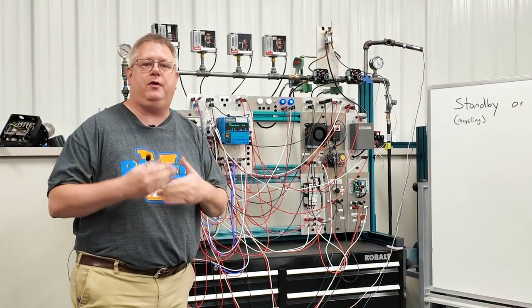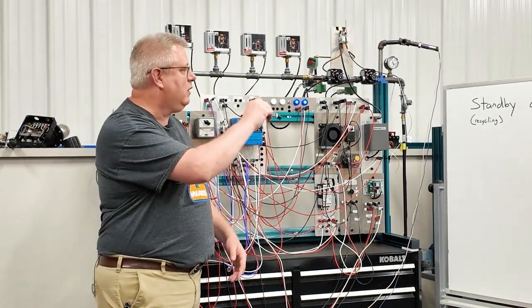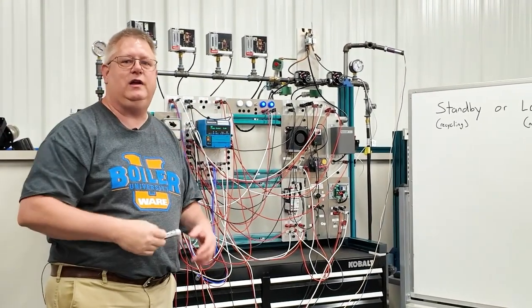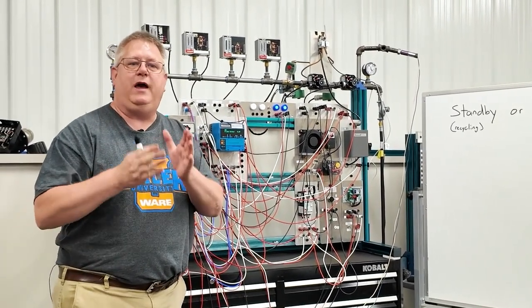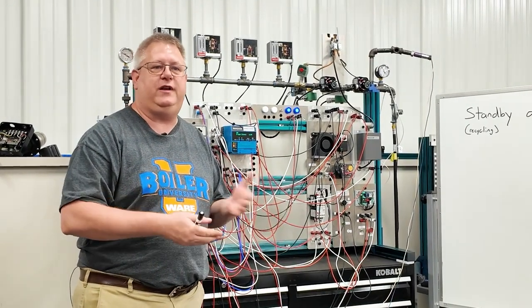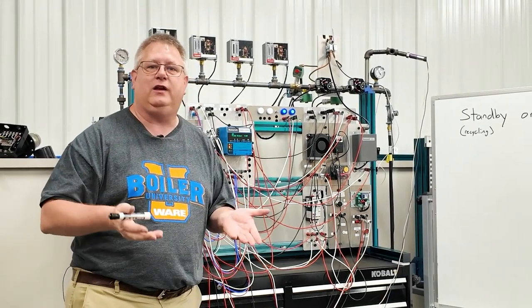So if we simply trip the boiler on each individual limits and kind of make a laundry list of what response we get to each limit trip, then we'll basically have a cheat sheet for the future. So when we're down on a particular limit string, we at least know which switches we can check.